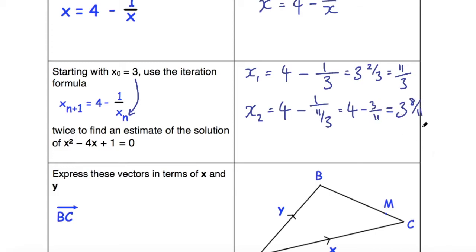So we get 3 and 8/11, and if I change that to a mixed fraction, 3 times 11 is 33, plus 8—that's 41/11. So x₂ is 41/11 for my final answer.